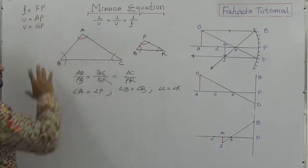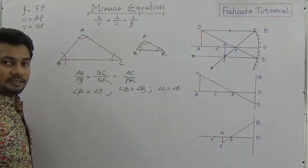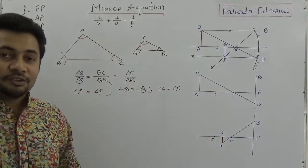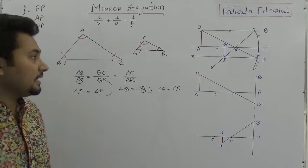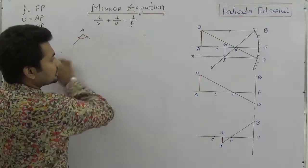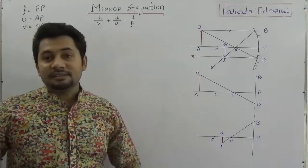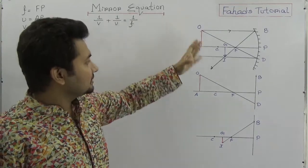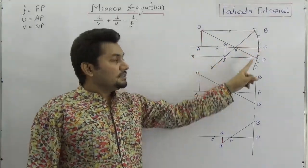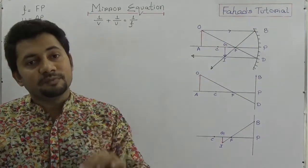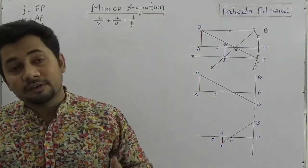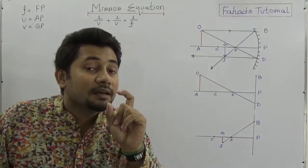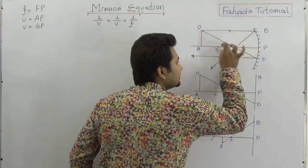Now this concept will definitely apply here when we think about the same concept in this figure. You see the figure I already explained — OA is an object which is placed after C, and GI is the image which is formed in between C and F.